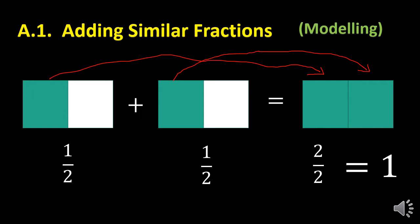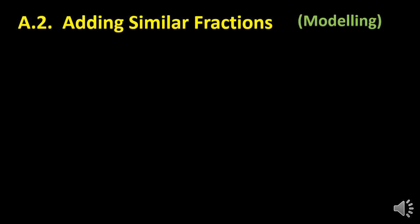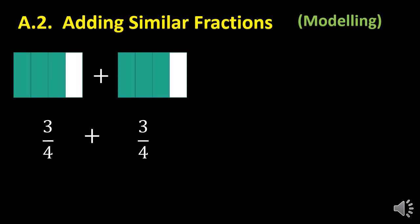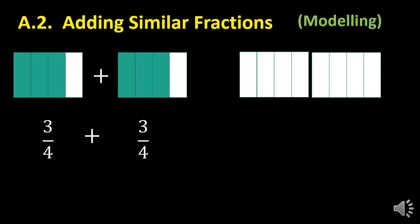That is how we add similar fractions using the modeling approach. Let's have another example. This time I have three-fourths plus another three-fourths. Here I have almost a whole part and almost another whole part, so I'll put two whole parts here. The whole part is divided into four parts, and I have three shaded parts out of four. I'll transfer all of them here, as well as another three parts here. If this is filled up, I'll transfer the leftover.